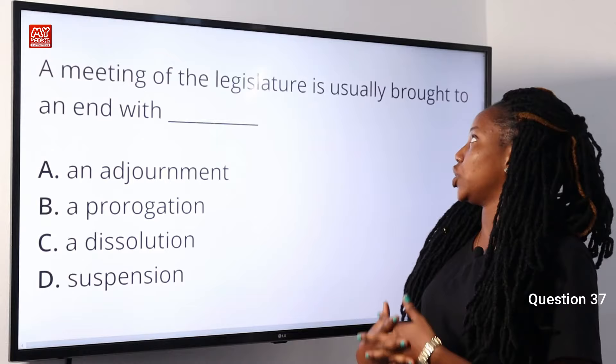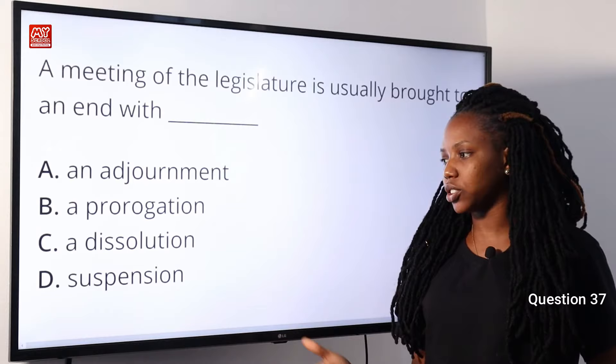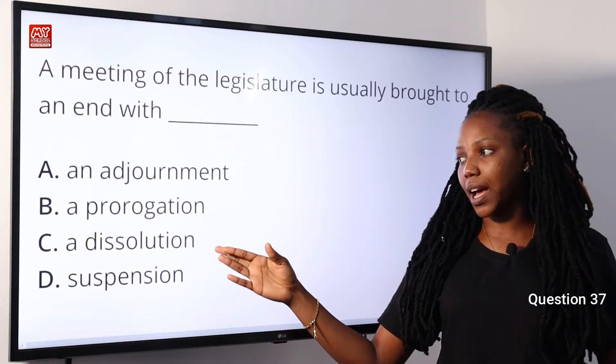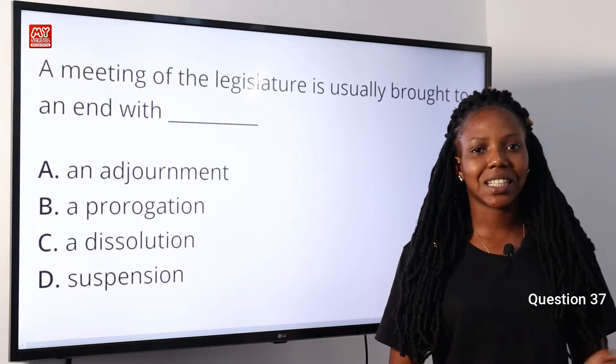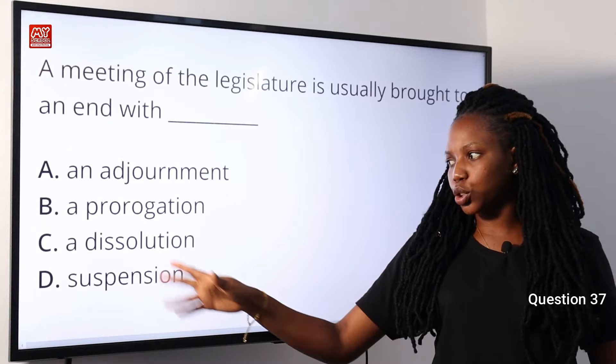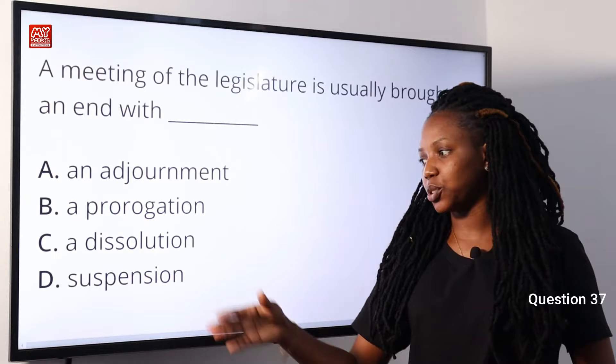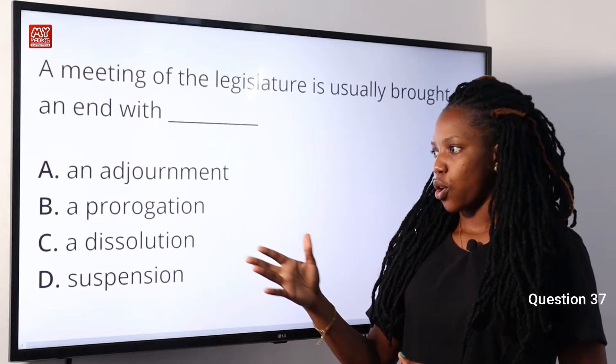Question 37. A meeting of the legislature is usually brought to an end with dash. A, an adjournment. B, a prorogation. C, a dissolution. D, suspension. Option B is the correct answer — prorogation is used to formally end a meeting. An adjournment means a meeting continued from a previous sitting. Dissolution is to end the term of office. Suspension is a temporary removal. Option B is the correct answer.